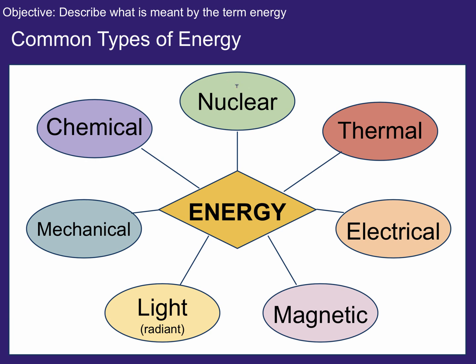Nuclear energy deals with energy stored between the particles in the nucleus of an atom. When you split an atom apart or fuse two atoms together, that releases nuclear energy. Examples include a nuclear bomb or nuclear power plant splitting atoms to release energy. The Sun fuses atoms to release energy, and that's also nuclear energy.